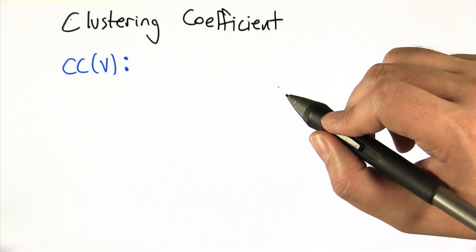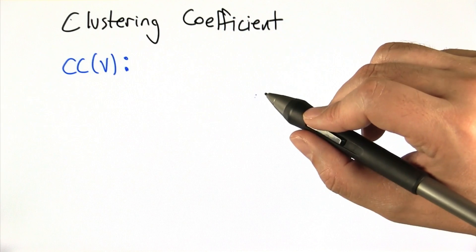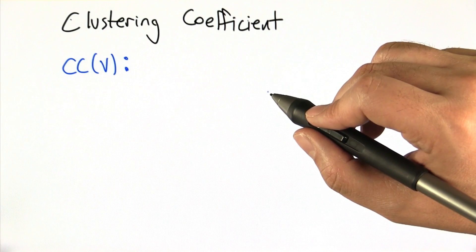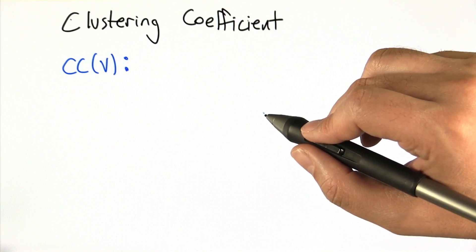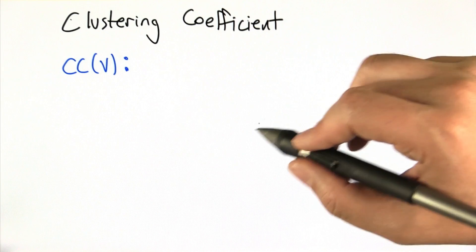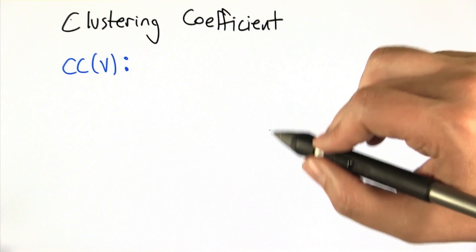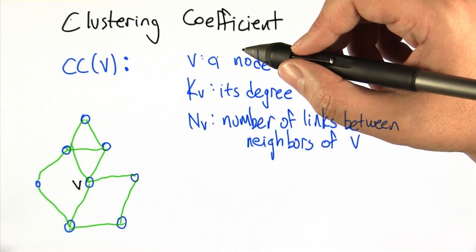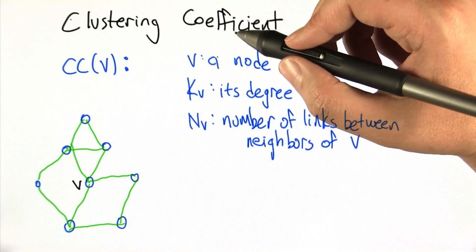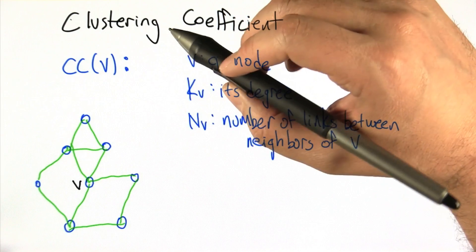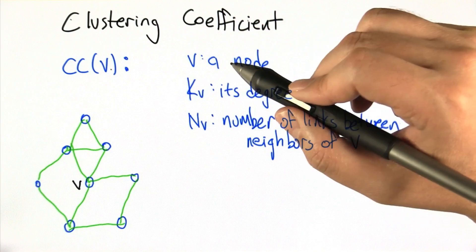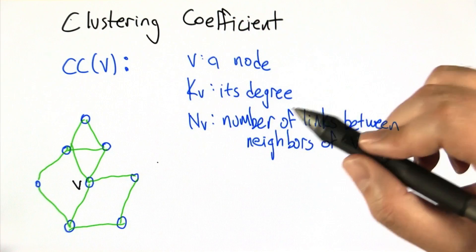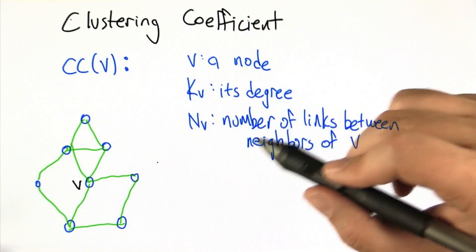What the clustering coefficient is trying to capture is cliquishness — how likely is it that two nodes that are connected are part of some kind of larger highly connected group of nodes? One typical way of defining the clustering coefficient is to start off by talking about the clustering coefficient for a particular node in a graph. We're going to generalize this to the entire graph next, but let's focus on a single node.